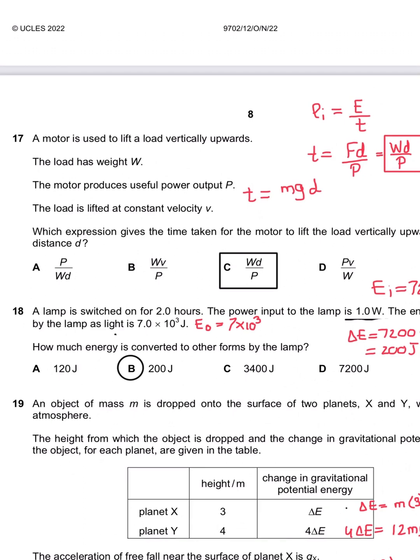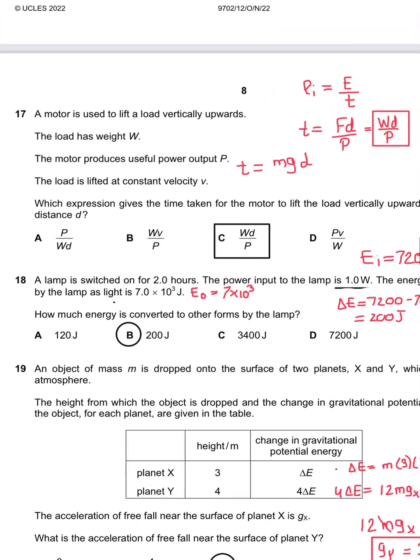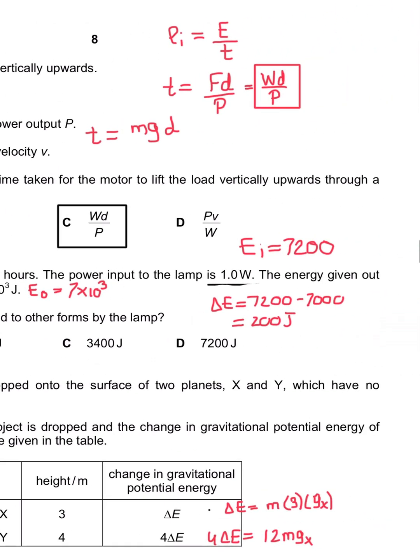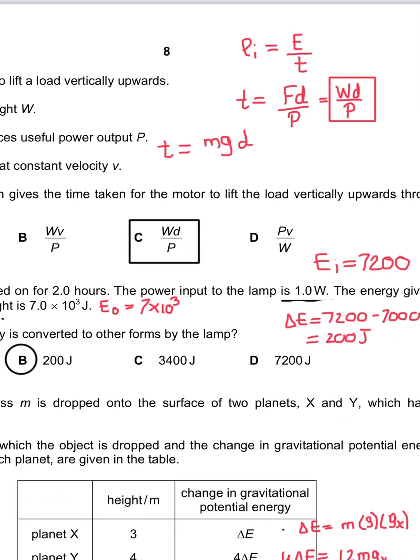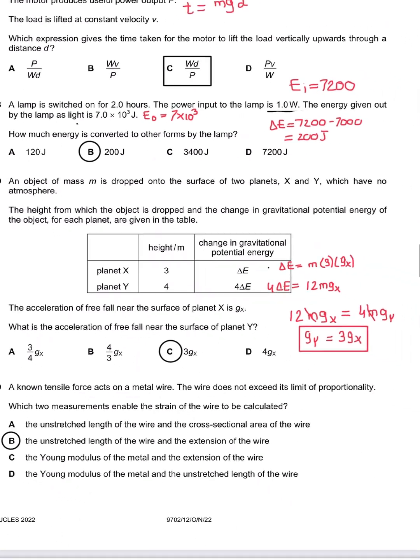Question 18: A lamp is switched on for two hours. The power input to the lamp is 1 watt. The energy given out by the lamp is 7 times 10 to the power 3 joules. How much energy is converted to other forms by the lamp? It's asking about the dissipated energy. The output energy is 7 times 10 to the power 3. The input energy is E equals Pt. Power is 1 watt, time is 2 hours, which is 2 times 60 minutes times 60 seconds, making 7200 energy input. 7000 is the energy output, so the difference is 200 joules. So B is the appropriate answer.